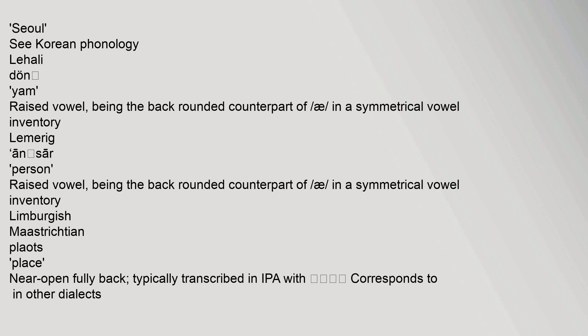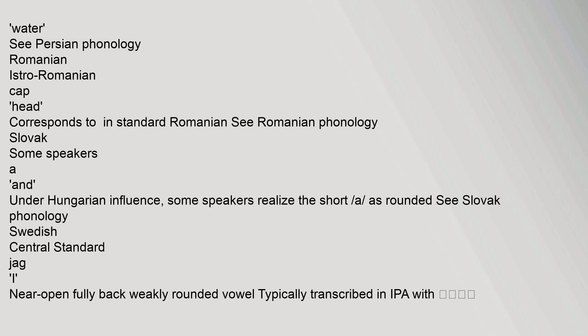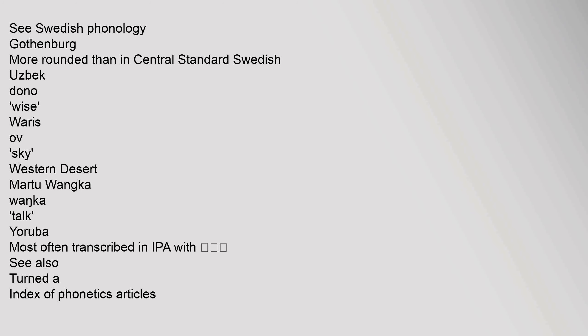In Limburgish Maastrichtian, the vowel is near open and fully back, typically transcribed in IPA with the relevant symbol, corresponding to other dialects' realization. In Norwegian dialects along the Swedish border it is weakly rounded and fully back; see Norwegian Phonology. In Standard Eastern Norwegian it is mid-centralized, typically transcribed in IPA accordingly; also described variously; see Norwegian Phonology. In Occitan Limousine and some northern dialects, it occurs. In Persian, see Persian Phonology. In Romanian Eastro-Romanian, it corresponds to the standard Romanian vowel. In Slovak, under Hungarian influence some speakers realize the short A as rounded; see Slovak Phonology. In Swedish Central Standard, it is a near open, fully back, weakly rounded vowel; see Swedish Phonology. In Uzbek and Western Desert languages such as Martu Wankajunga, and in Yoruba, it is most often transcribed in IPA with the relevant symbol.